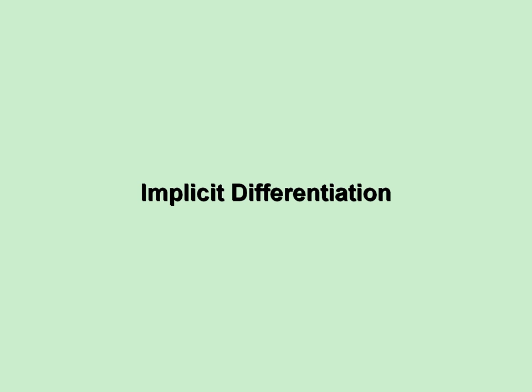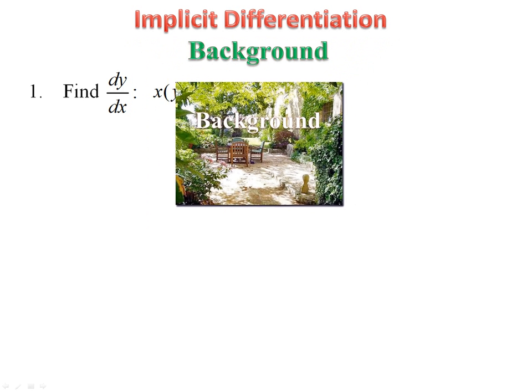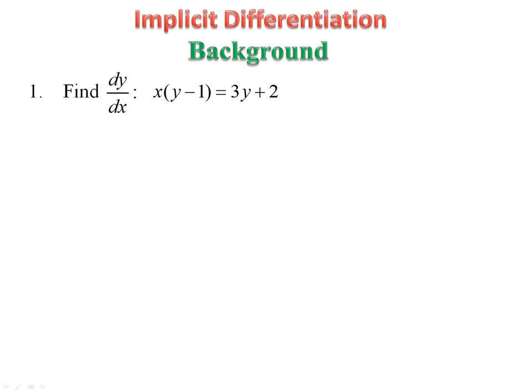Implicit differentiation — a bit of background. If we have to differentiate x times (y minus 1) equals 3y plus 2, we're going to have to get y as the subject of the formula.